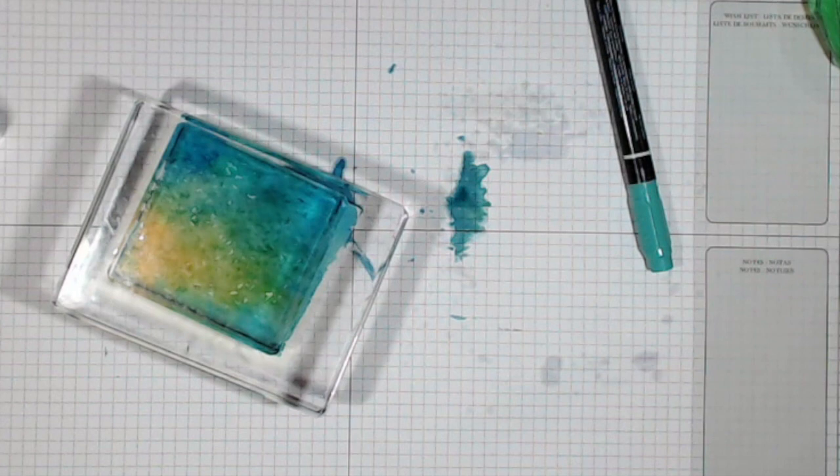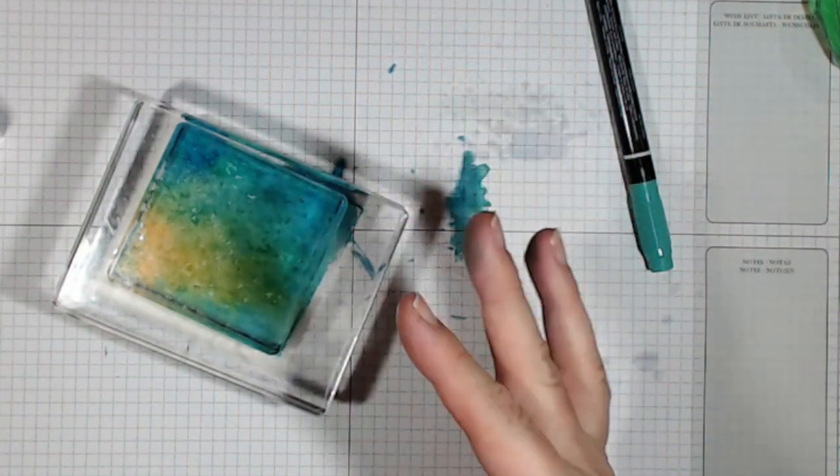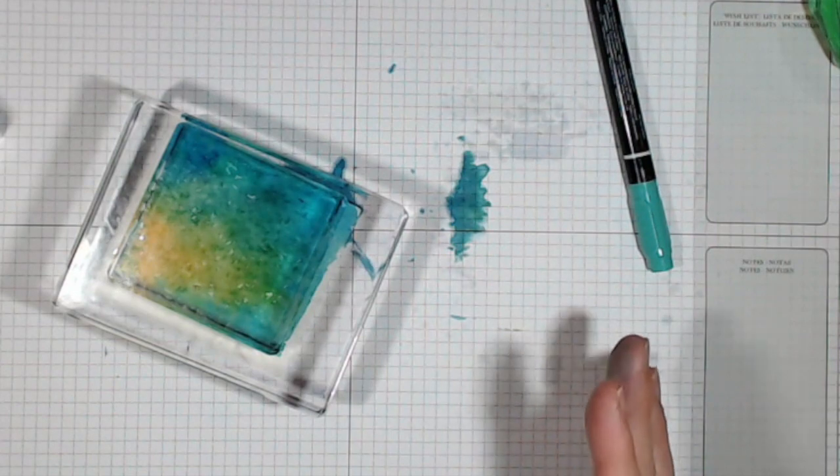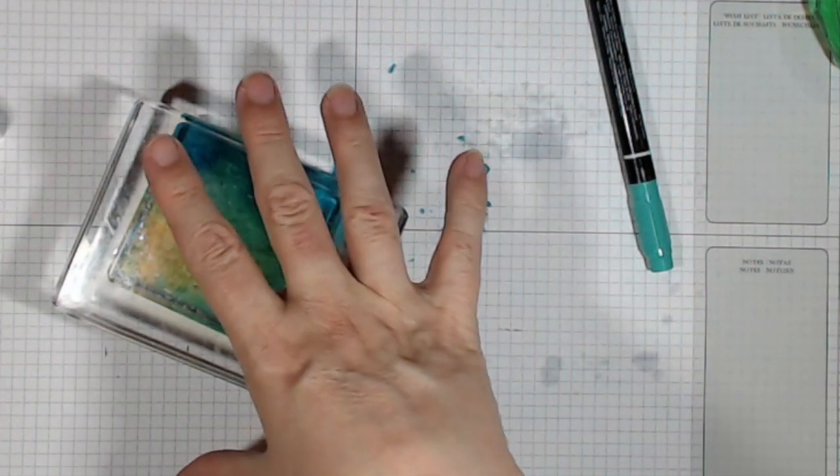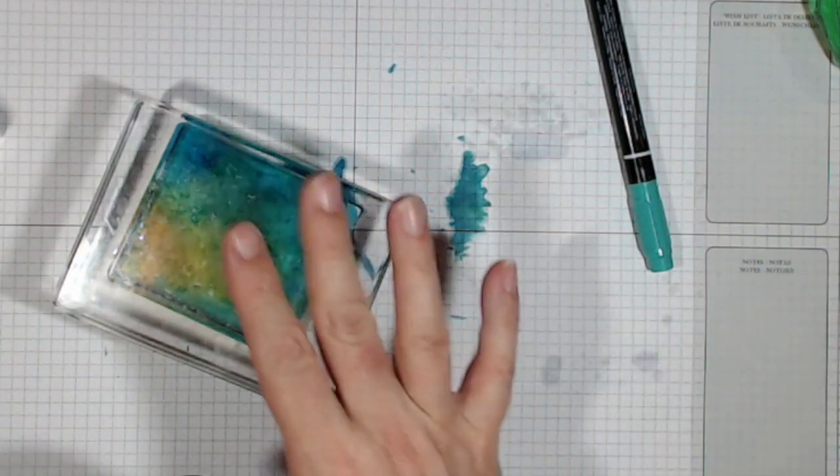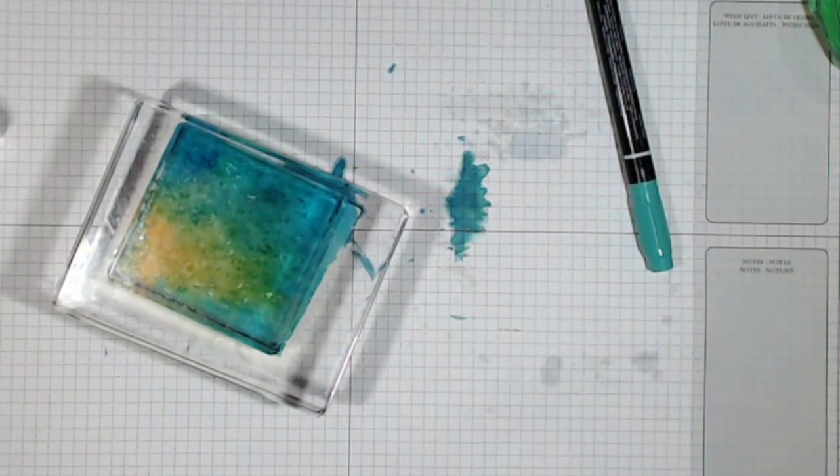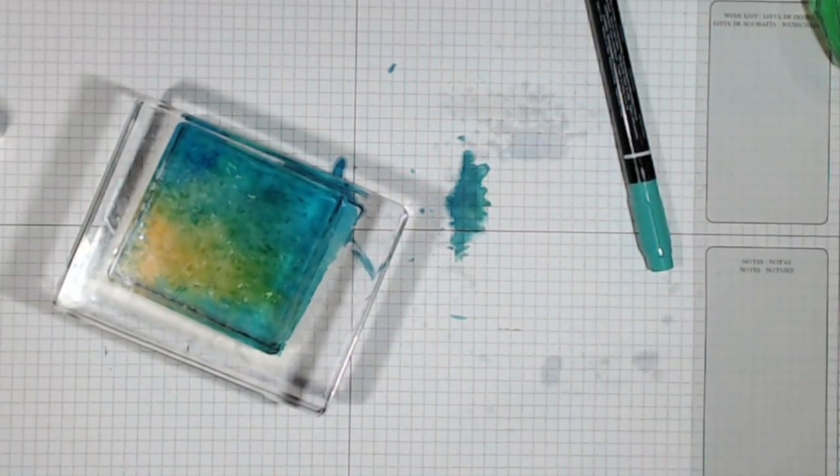I'm going to leave that for five minutes. Five minutes is the magic time when it's just long enough for the ink to transfer, but not so long that it starts drying up and getting sticky. If I took the block away now, my colors would be quite pale - they wouldn't have absorbed into the paper. So I'll leave that there for five minutes and come back to it.